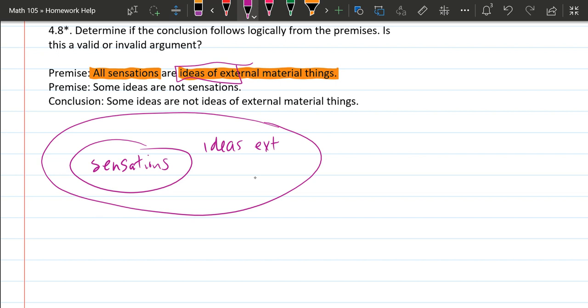So we have all sensations are ideas of external material things. That means all the sensations are inside the set of all the ideas of external material things. That's our first premise.